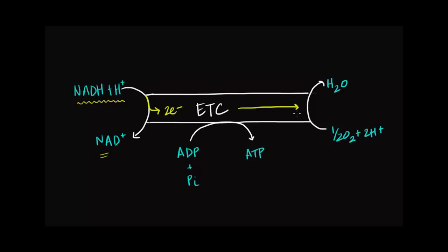This flow of electrons fuels the phosphorylation of ADP and a free phosphate group into ATP. Of course, this is all done indirectly through a proton gradient that's formed in the intermitochondrial membrane.